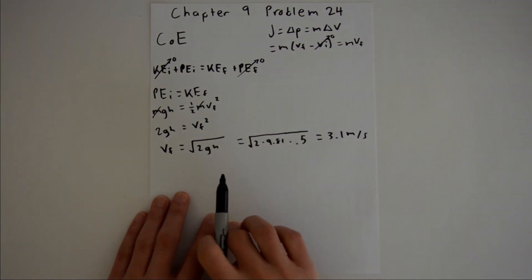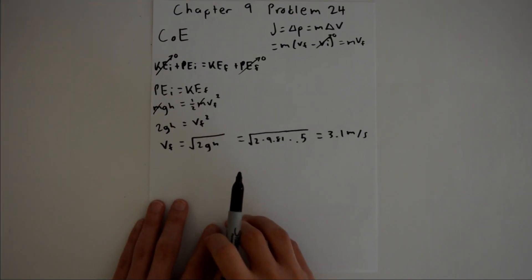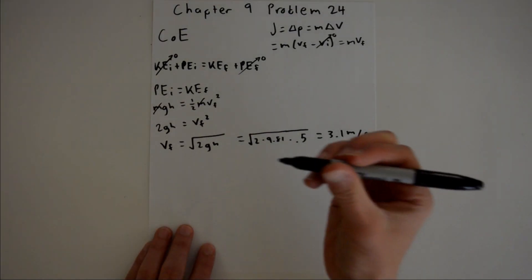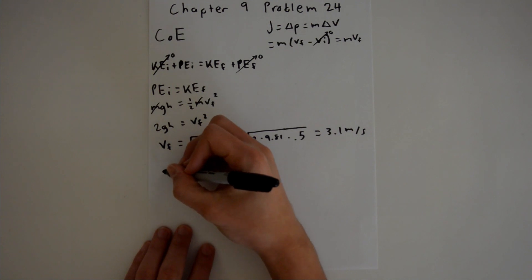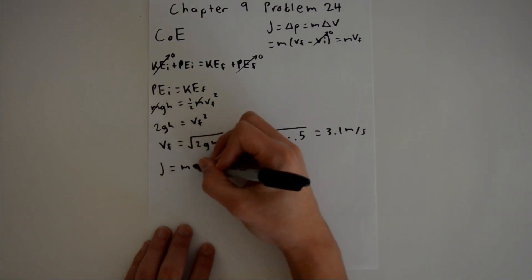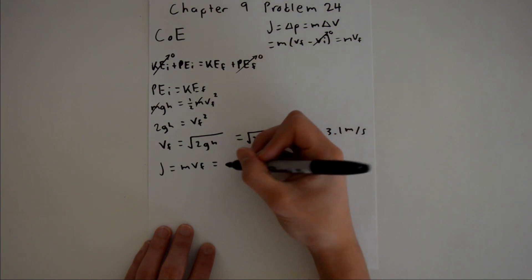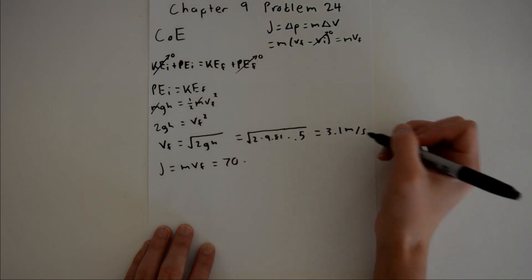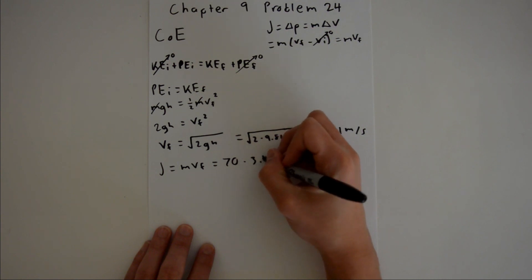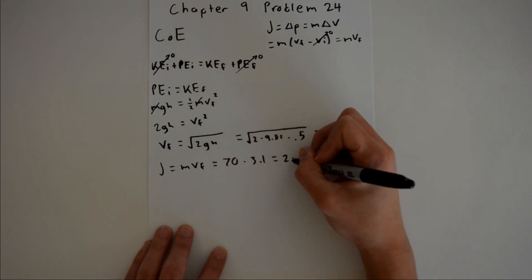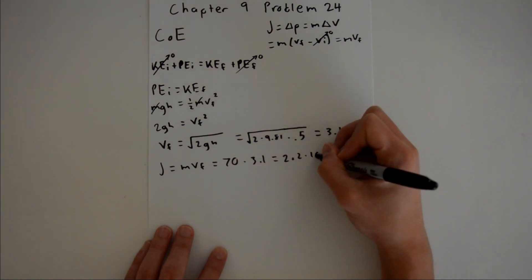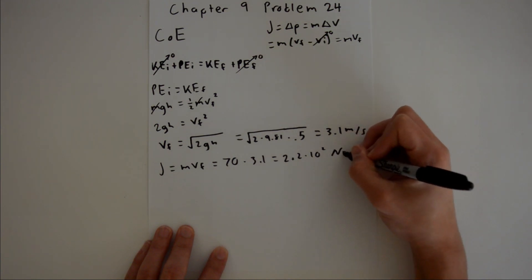Now we can re-plug that back into our impulse equation, and we have J equals mv final, which is our mass is 70, and our velocity final we just found to be 3.1. That is approximately 2.2 times 10 to the second newton seconds.